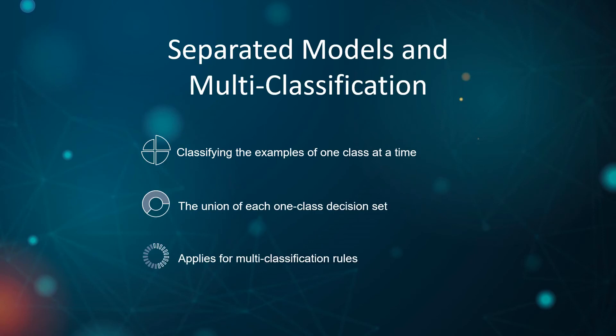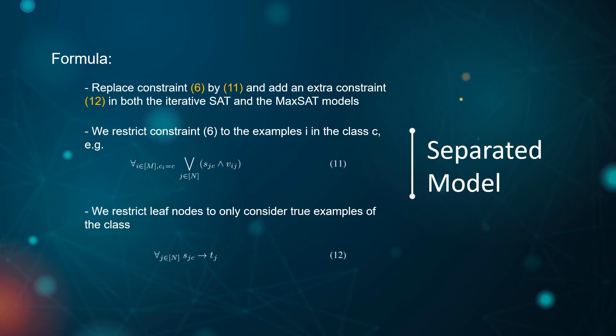The convenient feature of minimal decision sets is the following. Separating models construct the union of minimal decision sets, where each only classifies instances of one class. For example, if the training examples have two classes, one decision set only classifies the rules of class 1, the other only classifies the rules of class 2, and the final decision set is the union of the two. The separating model also supports multi-class classification. Clearly, the separating models are not necessarily larger than the complete model. We construct a separated SAT model by restricting constraint sets to apply only to examples of the appropriate class in both iterative SAT models and MaxSAT models, and restrict leaf nodes to consider only training examples of that class.